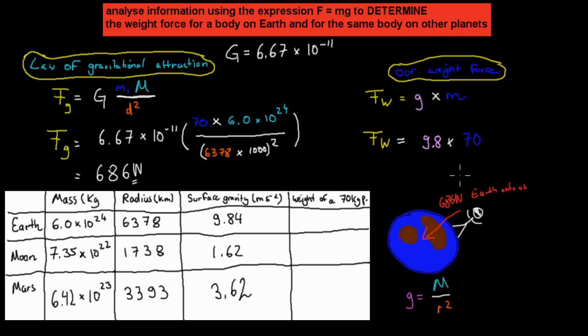But because this is to do with attraction, there's going to be an equal and opposite kind of attraction as well between us and the Earth. So if we look at what kind of impact we have, we also have an impact. The Earth is attracted to us by a force of 686 newtons as well.